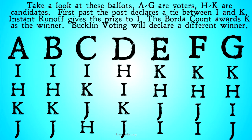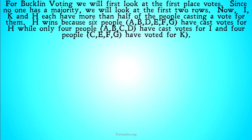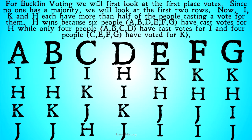Instant runoff gives the prize to I, because H will be eliminated in the first round and then I will have all the votes. Borda count awards K as the winner because it gets the most points. But Buckland voting is going to declare a different winner that's neither I nor K.